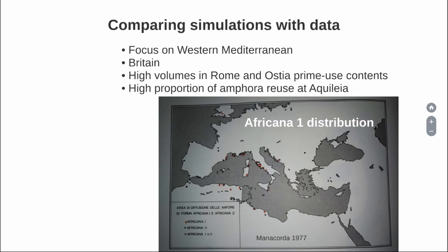The focus of this distribution is on the Western Mediterranean. So we expect more of this distribution in the west than in the east. It reached as far as Britain, maybe in small volumes, but it definitely got there. There are high volumes of prime use content — not reuse — in Rome and Ostia. And there is a high proportion of reuse at Aquileia, based on the Grado shipwreck, which is close to Aquileia. I want to check under which conditions I get a high proportion of reuse at the Grado shipwreck and how I can reproduce that — just one anchor point I want to use.